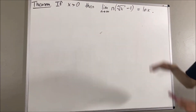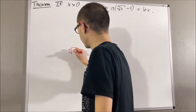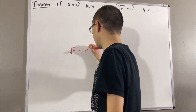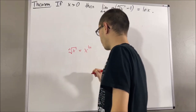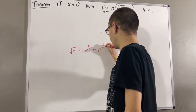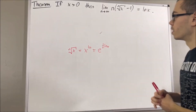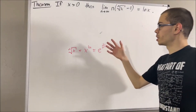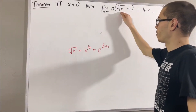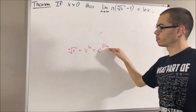We know that the n-th root of x is equal to x to the power of 1 over n, which is equal to e to the power of 1 over n times the natural log of x. So for the duration of this video, we're going to treat the n-th root of x as though it's e to the 1 over n natural log of x.